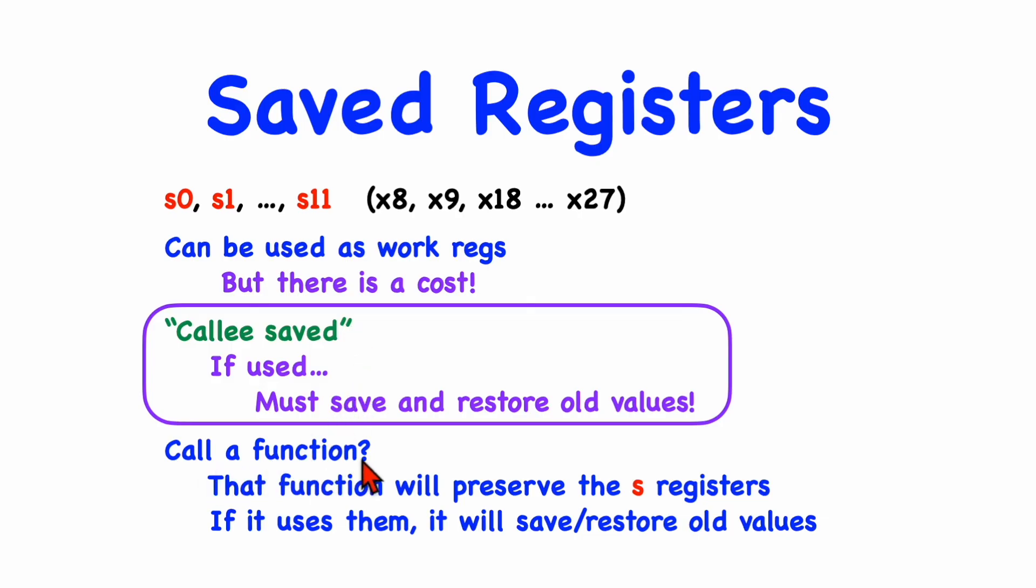Okay, if you call a function, you can be guaranteed by the calling convention that that function will preserve the value of the S registers, unlike the T registers. So if you need something that's going to be preserved across a function call, you might want to use an S register for that. And you know that, if the function respects the conventions, that if it uses those S registers, it will first save the previous value and then restore that before it returns. So you can rely on any called functions not modifying the S registers.